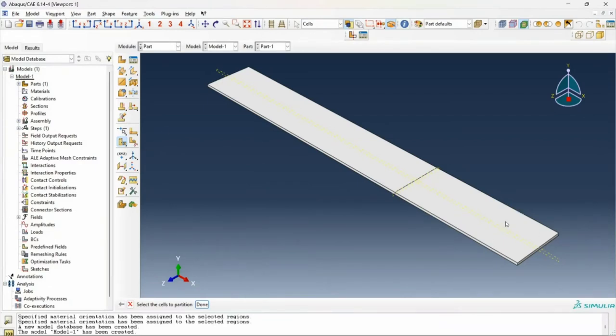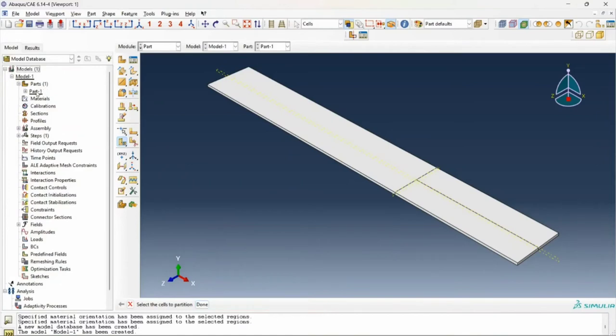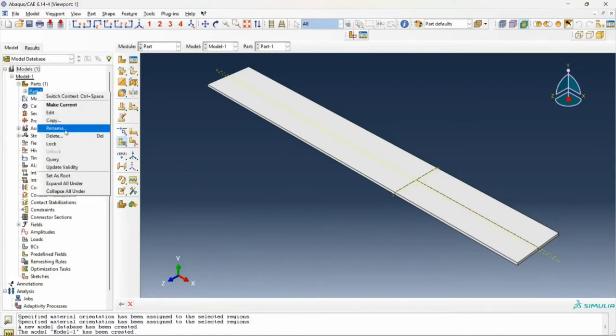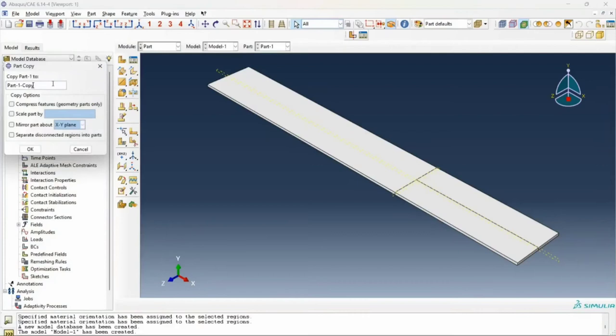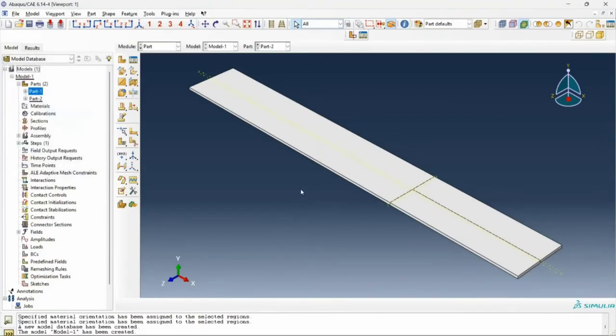Now I'll select this cell to partition, click done and select this datum plane to partition the cell. Now we can copy our part. I right click, click on copy, I rename the part part 2. There we are. We've created our CAD essentially now.